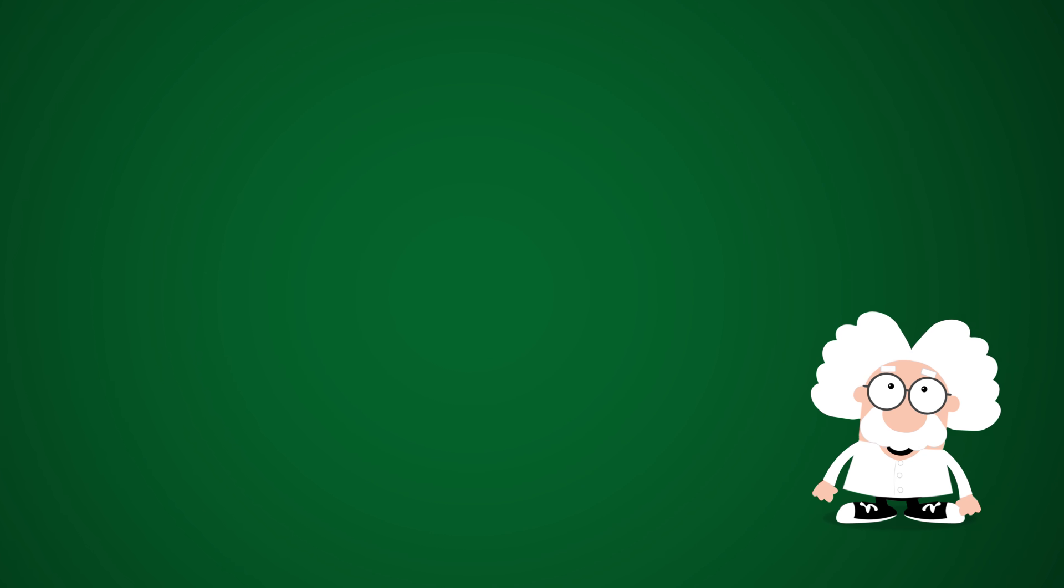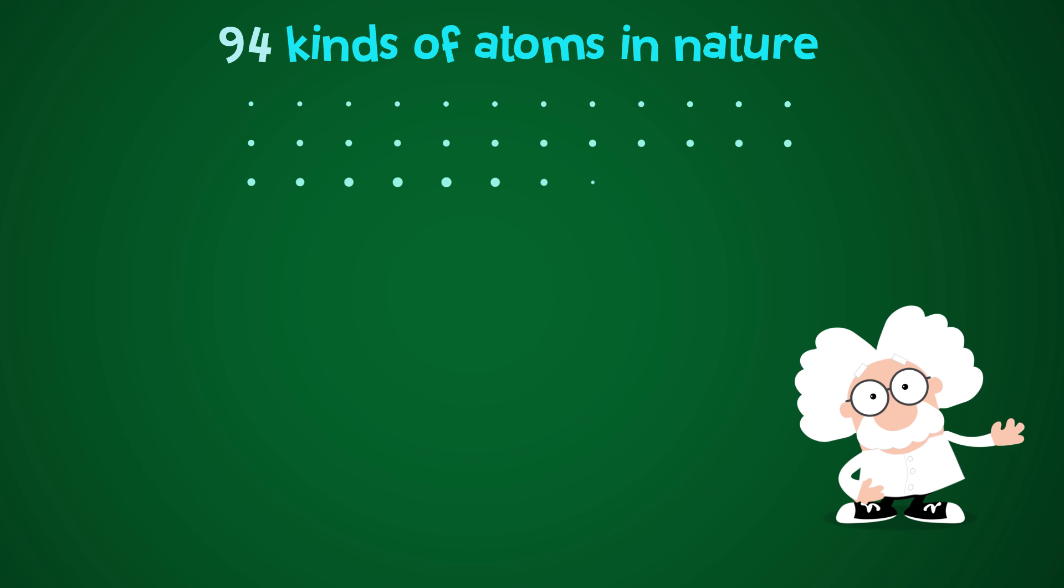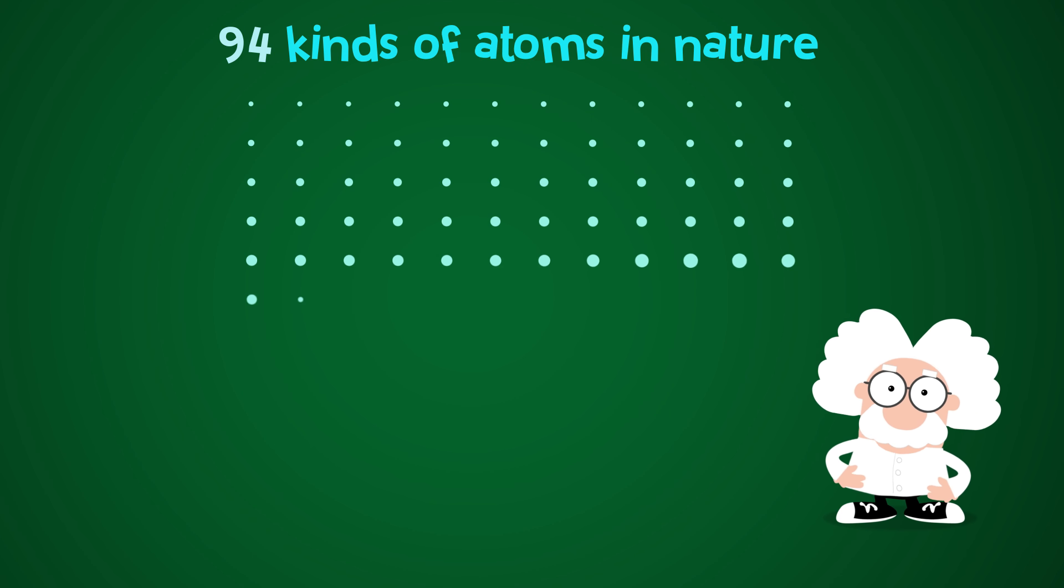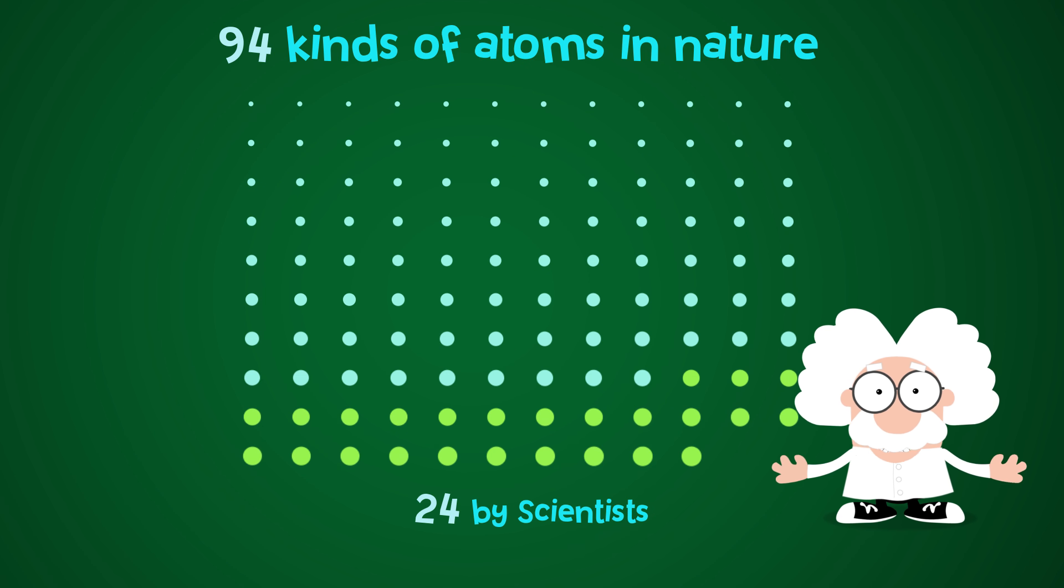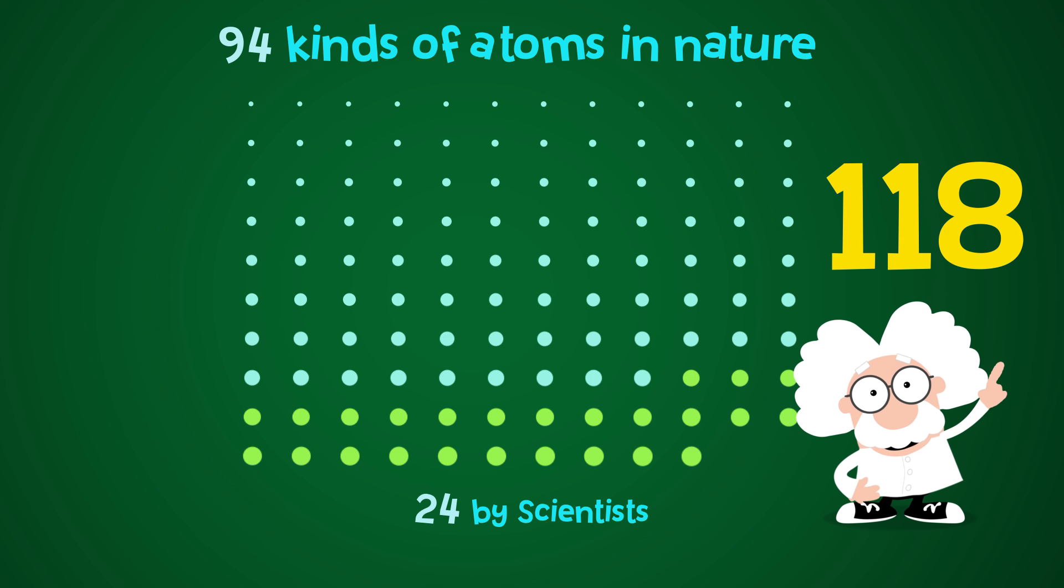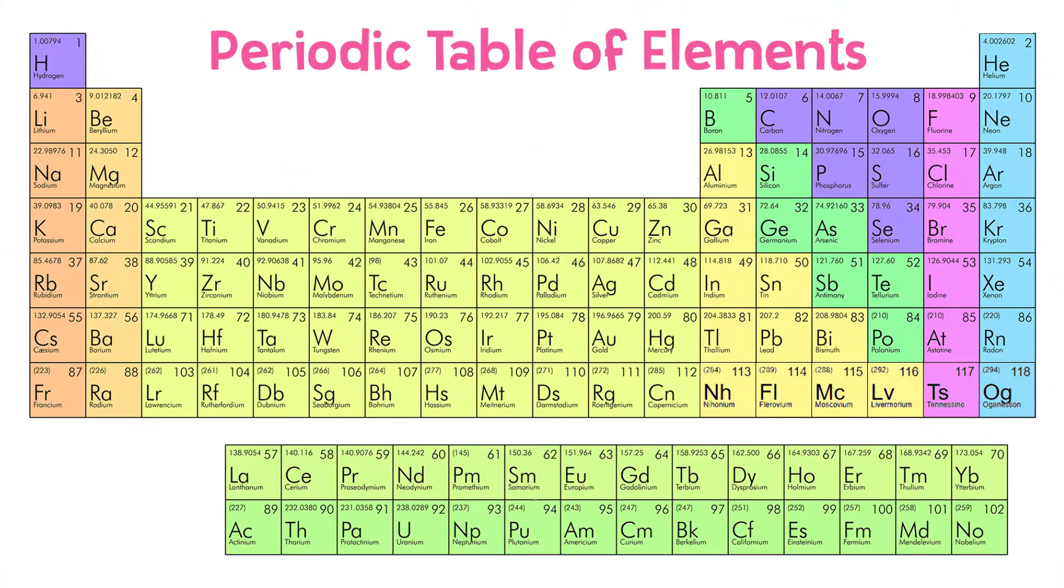Did you know that 94 kinds of atoms make up everything found in nature? And scientists have experimentally created 24 more, which brings the total number up to 118 kinds of atoms. Scientists call each kind of atom an element, and they put them all on this chart called the periodic table of elements. Each element here is special because it looks or acts differently from the other elements.